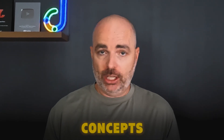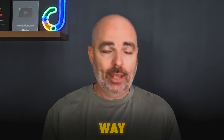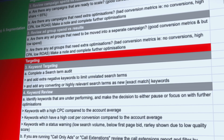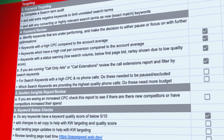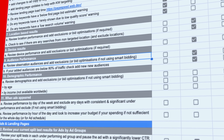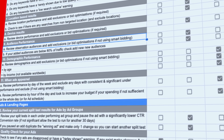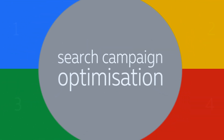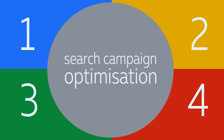In this video, I want to show you the core concepts and the best way that you can optimise your Google search campaigns in 2026. Right now, there are well over 75 different individual optimisation actions that you could complete inside of Google Ads for your search campaigns. But the good news is, despite all of those individual optimisation actions, we can break them into four core actions that you can use to increase the performance of your Google search campaigns.